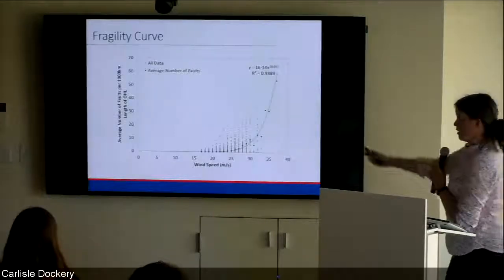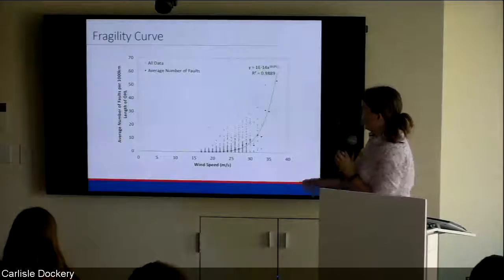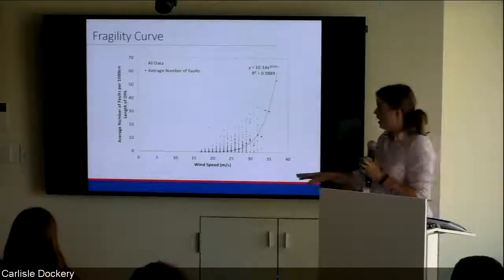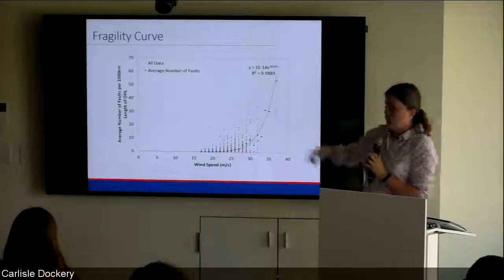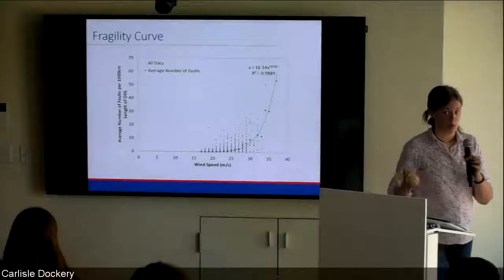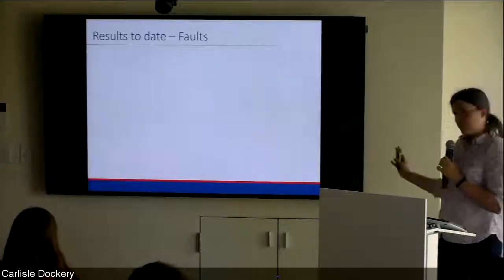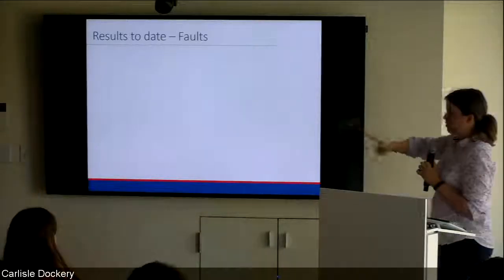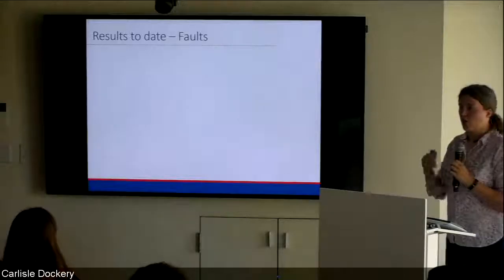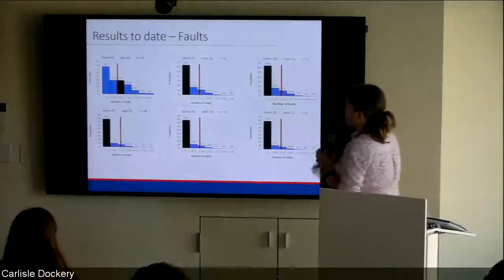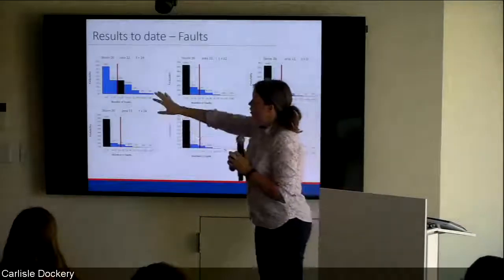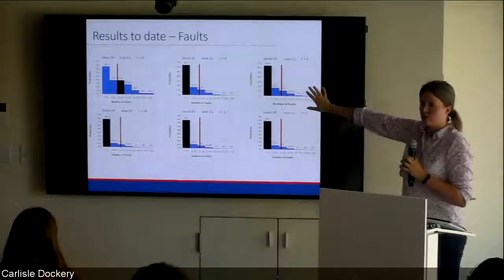Combining that with our wind speeds, we get our fragility curve - there's a huge amount of scatter, but if we take the averages per integer value of wind speed and plot those on a curve, we get quite a good correlation. We're looking at ways to take this scatter into account. Putting it all together in our model - starting with our events, passing through the fragility curves - here are some initial results: different storms and different areas within the Western Power region, plotted for 24 hours out, 12 hours out, and what actually happens.